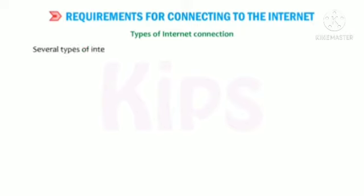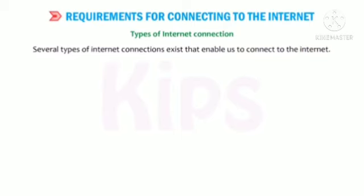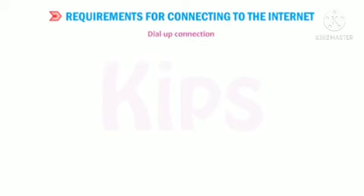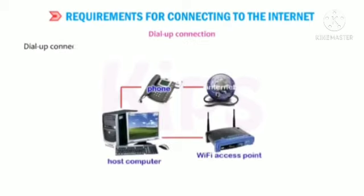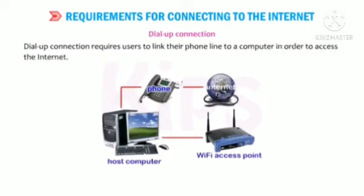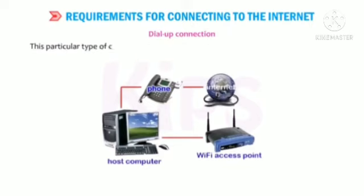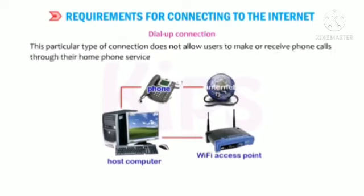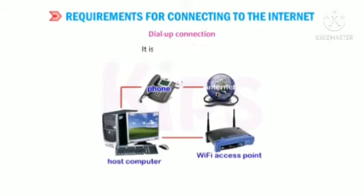Let us learn about the various types of internet connections. Several types of internet connections exist that enable us to connect to the internet. Dial-up connection requires users to link their phone line to a computer in order to access the internet. This type of connection does not allow users to make or receive phone calls through their home phone service while using the internet. It is a slow connection.